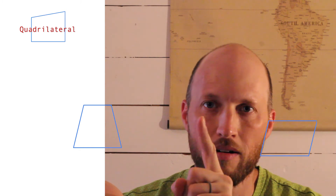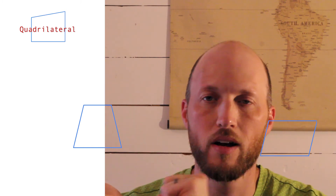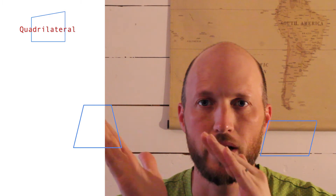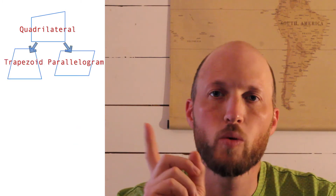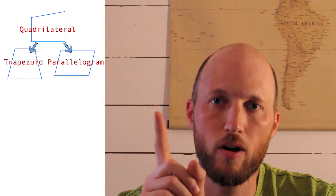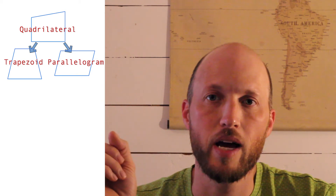There are some special types of quadrilaterals. We have a trapezoid and we also have a parallelogram. How are these two different? A trapezoid has one pair of parallel sides — just one pair. The other two sides are not parallel. A parallelogram has two pairs of parallel sides. So can a parallelogram be a trapezoid? No. Can a trapezoid be a parallelogram? No. But they are both quadrilaterals.